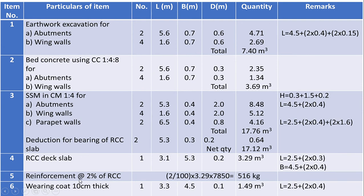Item number five: reinforcement for deck slab. Given that the amount of reinforcement is 2% of the RCC quantity, it is 2% of 3.29 cubic meters multiplied by the density of steel, 7850 kg/m³, which works out to 516 kilograms.